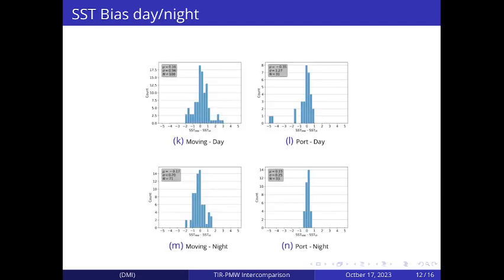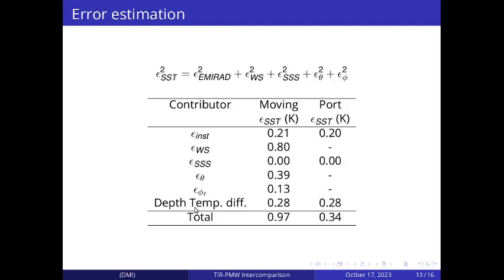The bias then was analyzed by day and night. And here we see that the microwave SST is a measure of the subskin and the infrared is the skin temperature. So it is interesting that the main difference shows that in moving conditions the subskin is warmer than the skin during the day and colder during the night. But we also wanted to analyze how much of this is the error.